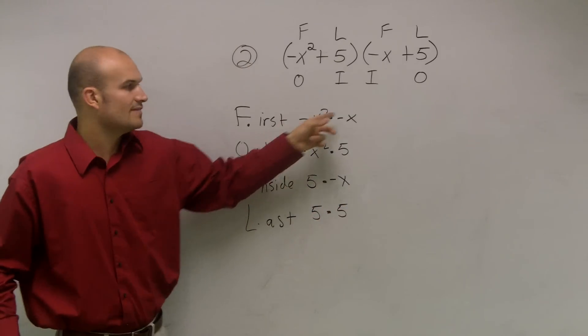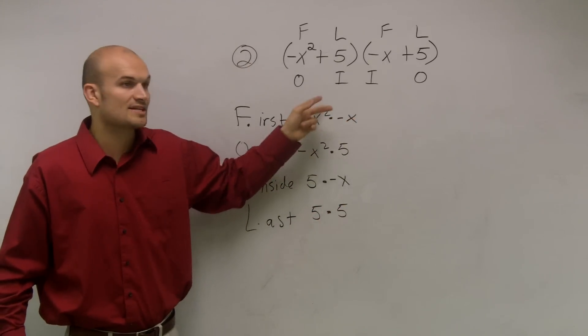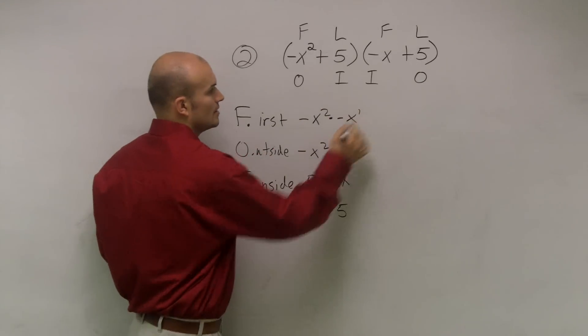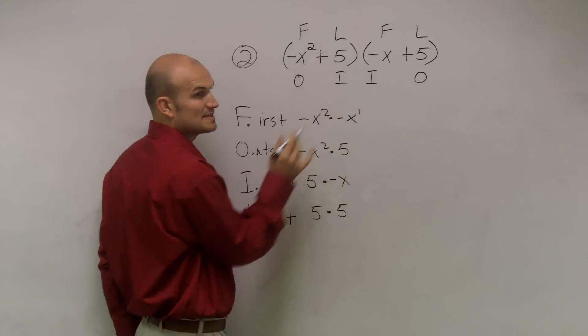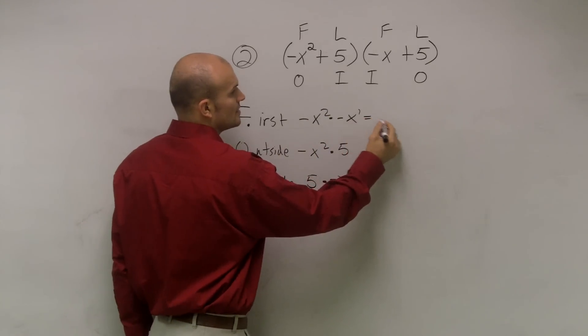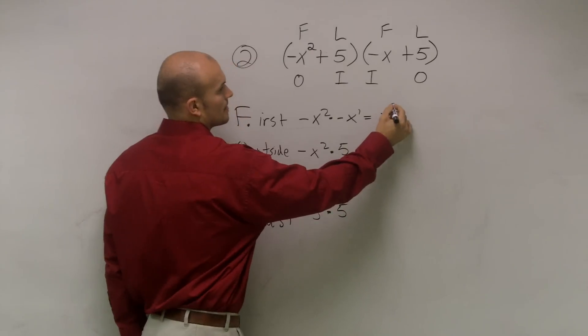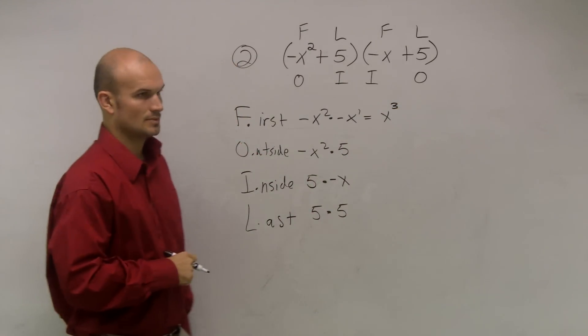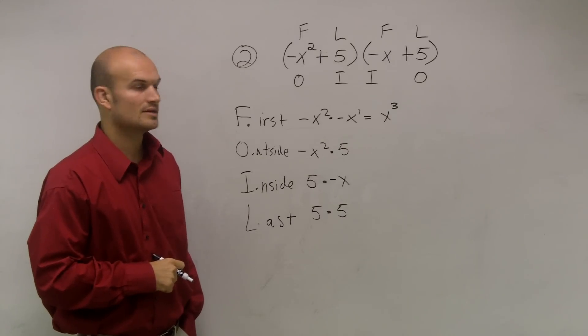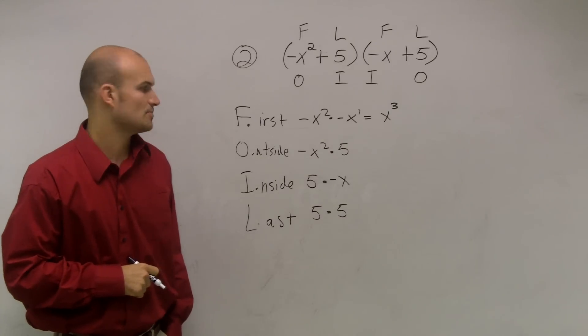Negative x squared times negative x. Remember, there's an exponent here. We need to add the exponents. And a negative times a negative provides a positive. So therefore, we're getting x to the third power. The negatives cancel out. And I add my exponents, because I'm multiplying them.